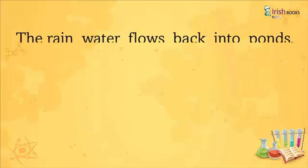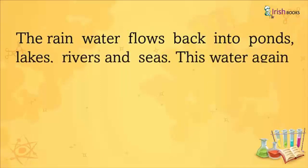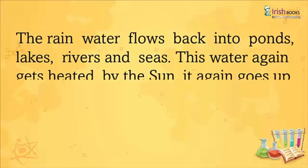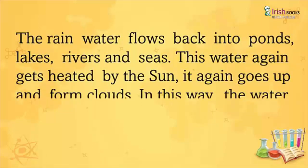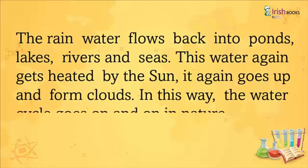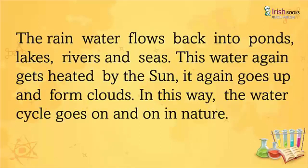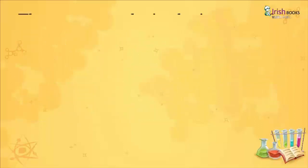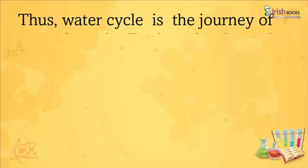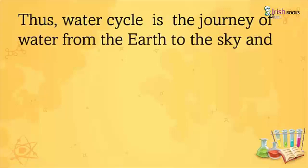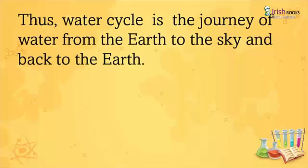The clouds fall on the earth's surface in the form of rain. The rain water flows back into ponds, lakes, rivers, and seas. This water again gets heated by the sun, goes up, and forms clouds. In this way, the water cycle goes on and on in nature. Thus, the water cycle is the journey of water from the earth to the sky and back to the earth.